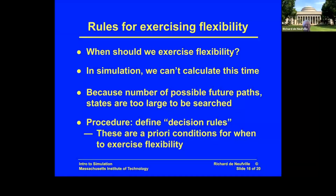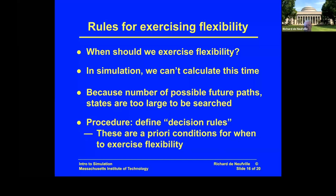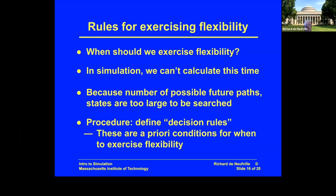We don't have a way of calculating when the optimal time is. There are some methods for dealing with that, such as dynamic programming, but dynamic programming implies there's nothing you can do about it to affect future aspects. This is the so-called path independence function, and the whole point of having flexibility is precisely that you can do things — so that powerful method does not work for us.